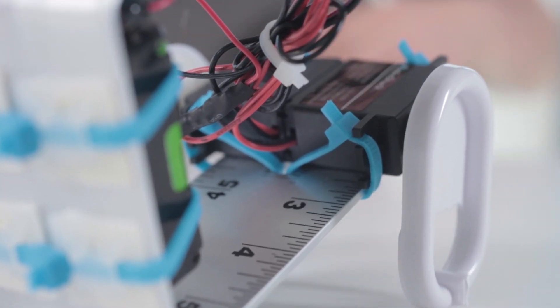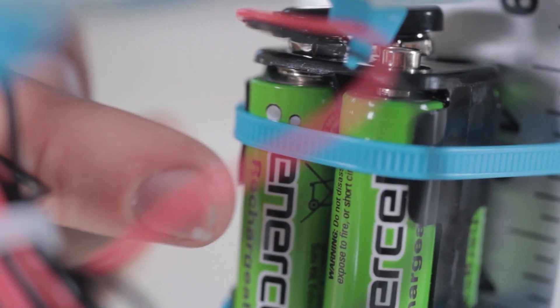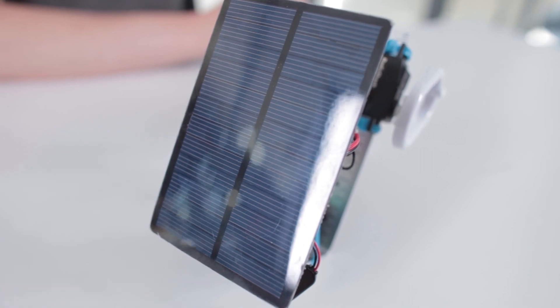So to build the robot, I basically took a ruler and bent it into a U-shape. I then went to Radio Shack and got motors, rechargeable batteries, a couple of diodes, and a solar cell.